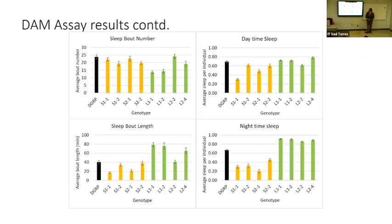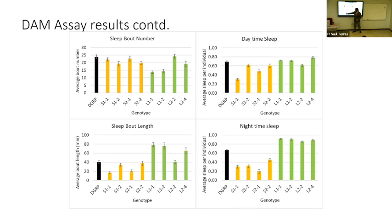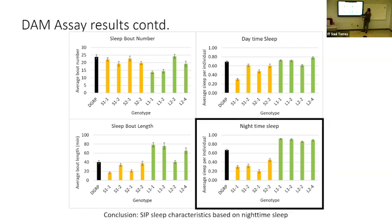We were also able to get other results like sleep bout number, daytime sleep bout length, and nighttime sleep. In daytime results there is no clear distinction. It's a bit clearer in sleep bout length, where DGRP is in the middle and short sleep and long sleep are around that same area, though some were still not statistically different from our control. We found that nighttime sleep data was most informative in characterizing these inbred panel flies according to their respective sleep characteristics.